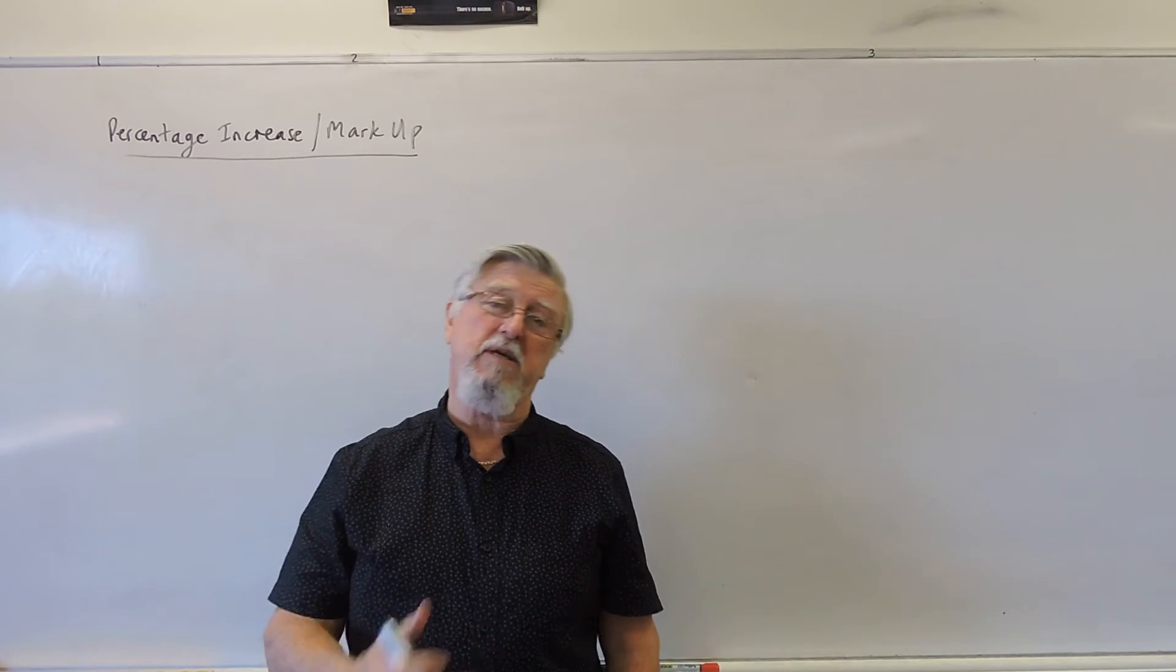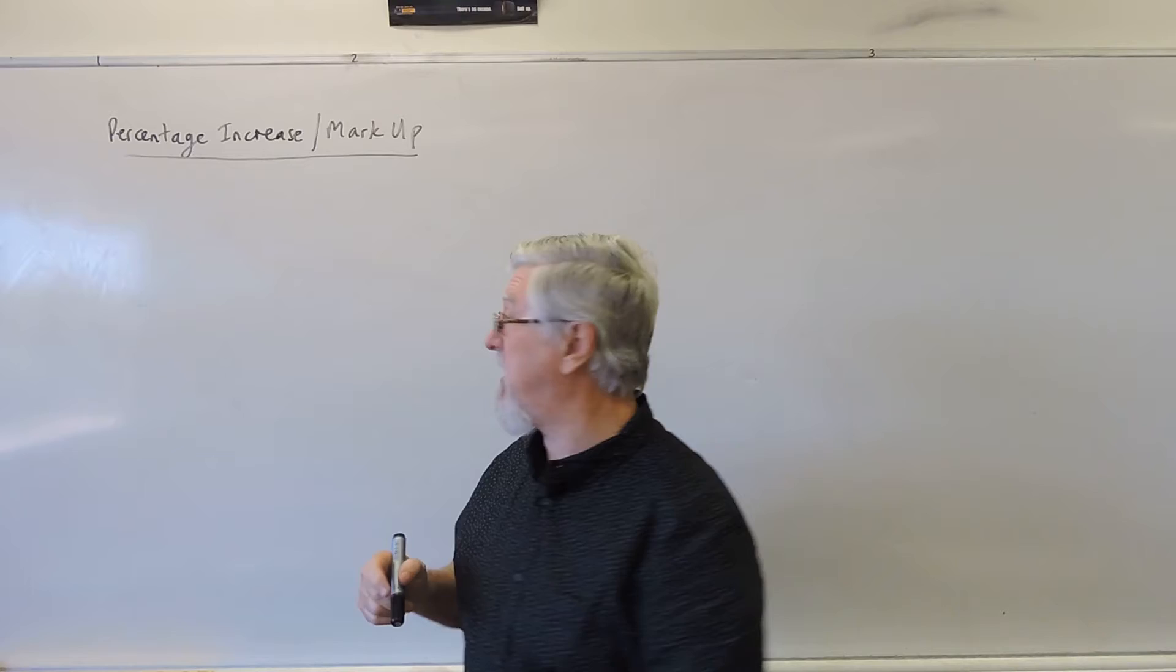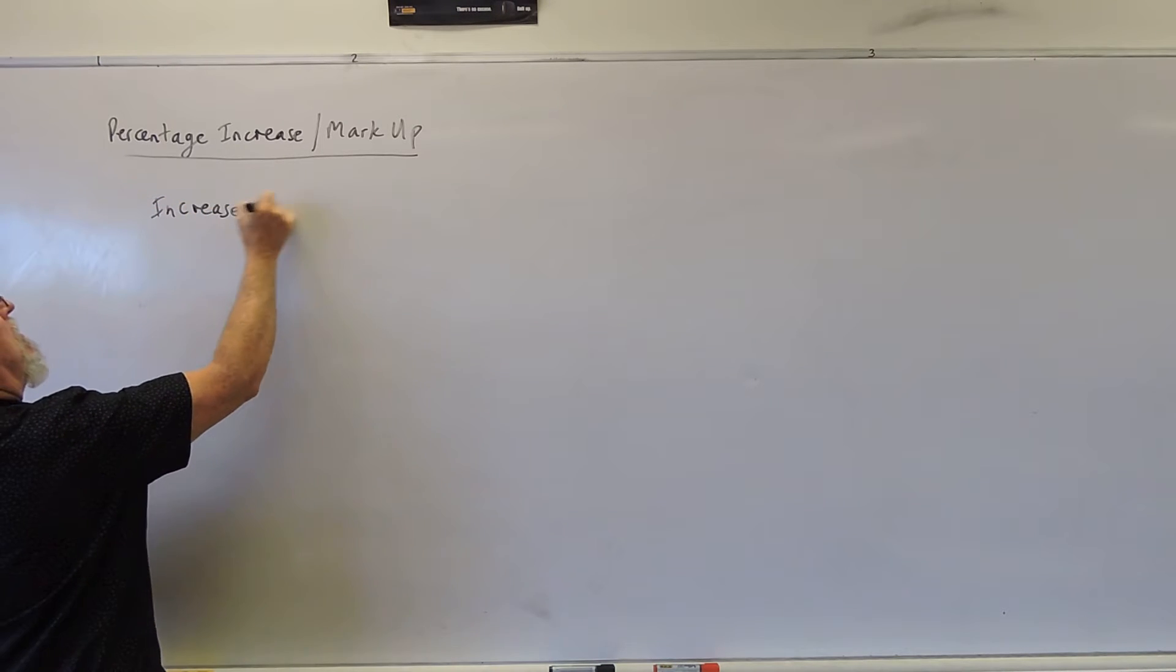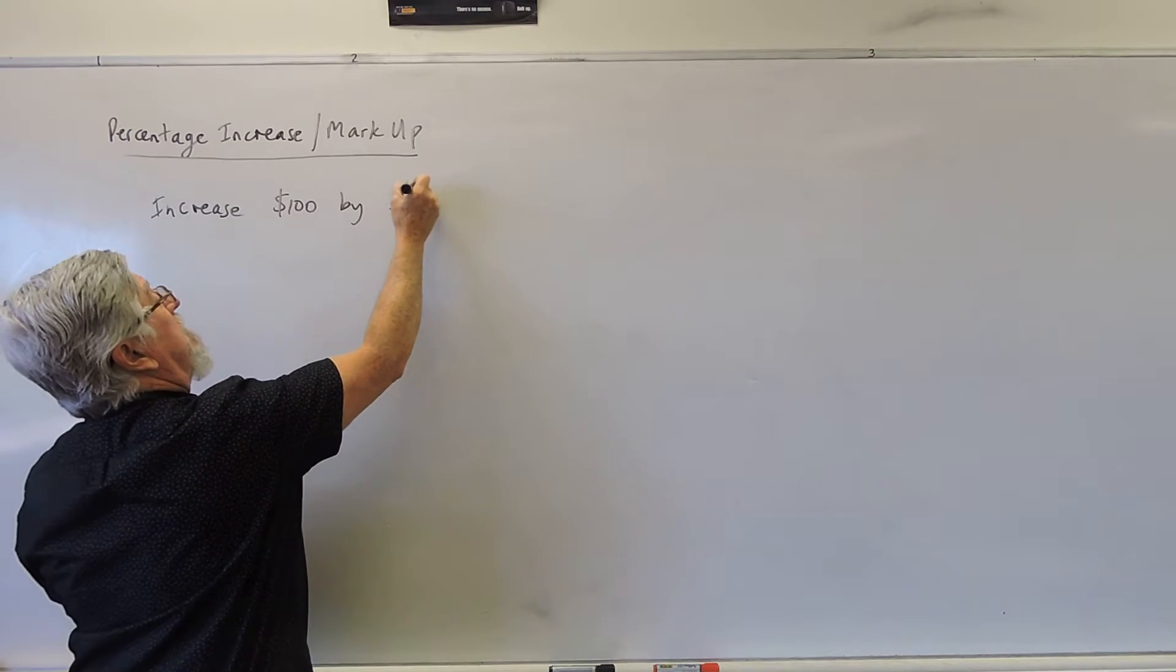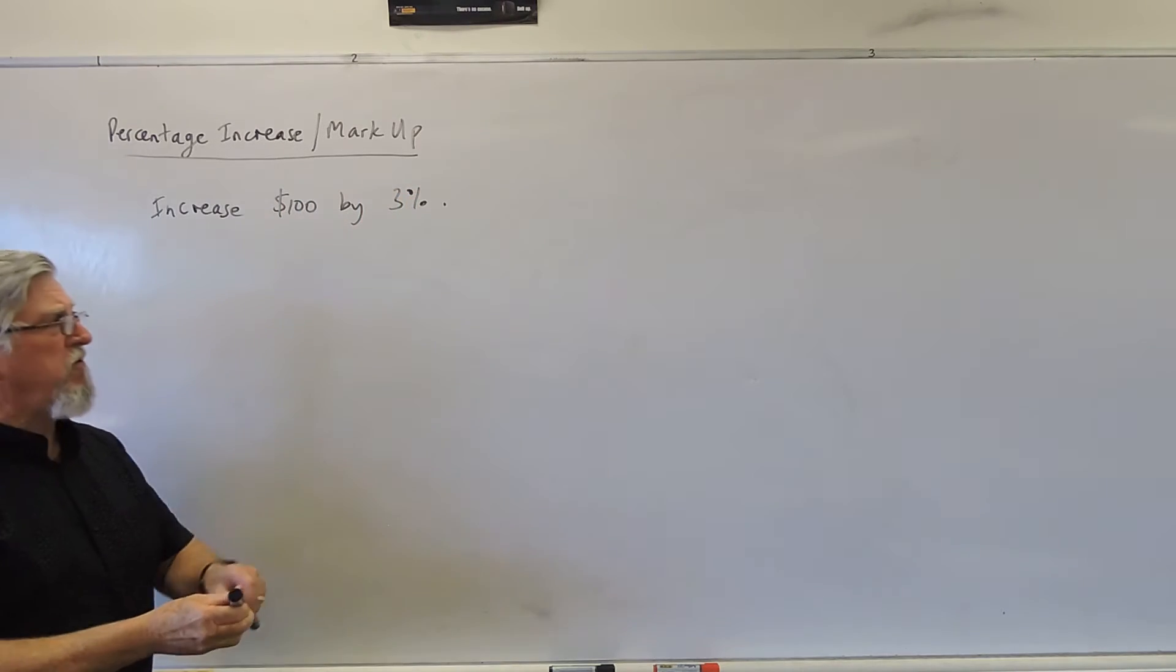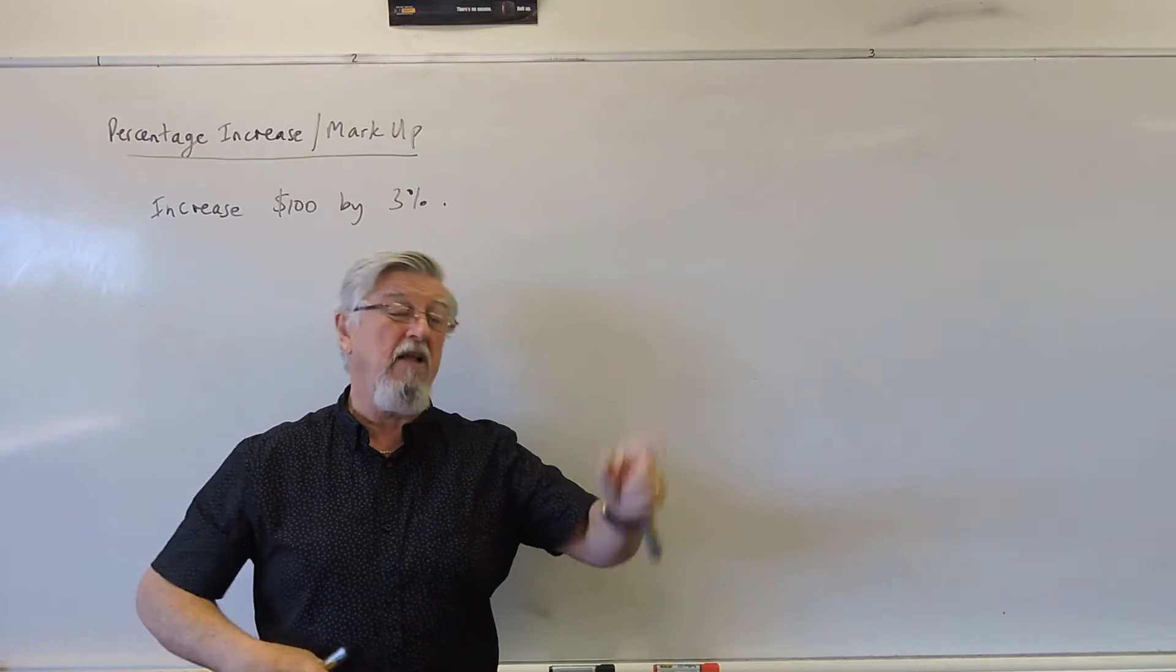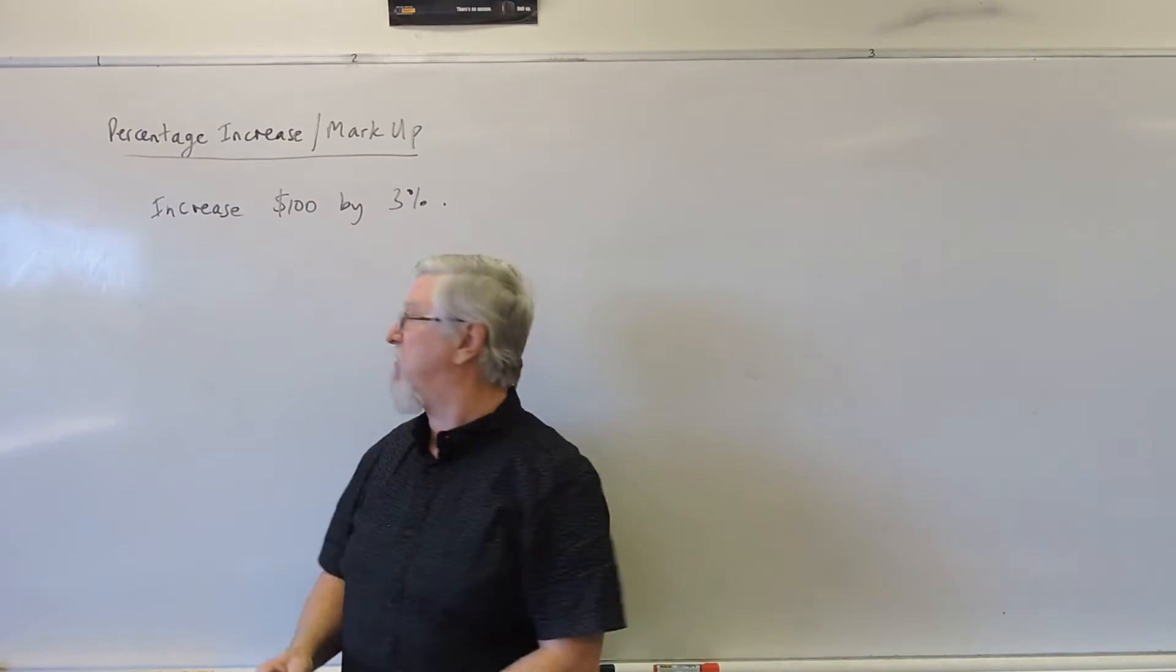The common thing to do in maths is a percentage increase or you want to mark the price up or something, and your teacher will say to you increase $100 by 3%. Now they first talk about the 3%. 3% is a little amount, means 3 out of every hundred. Now a lot of people looking at the video will go that's $103, so let's have a look at what happens.